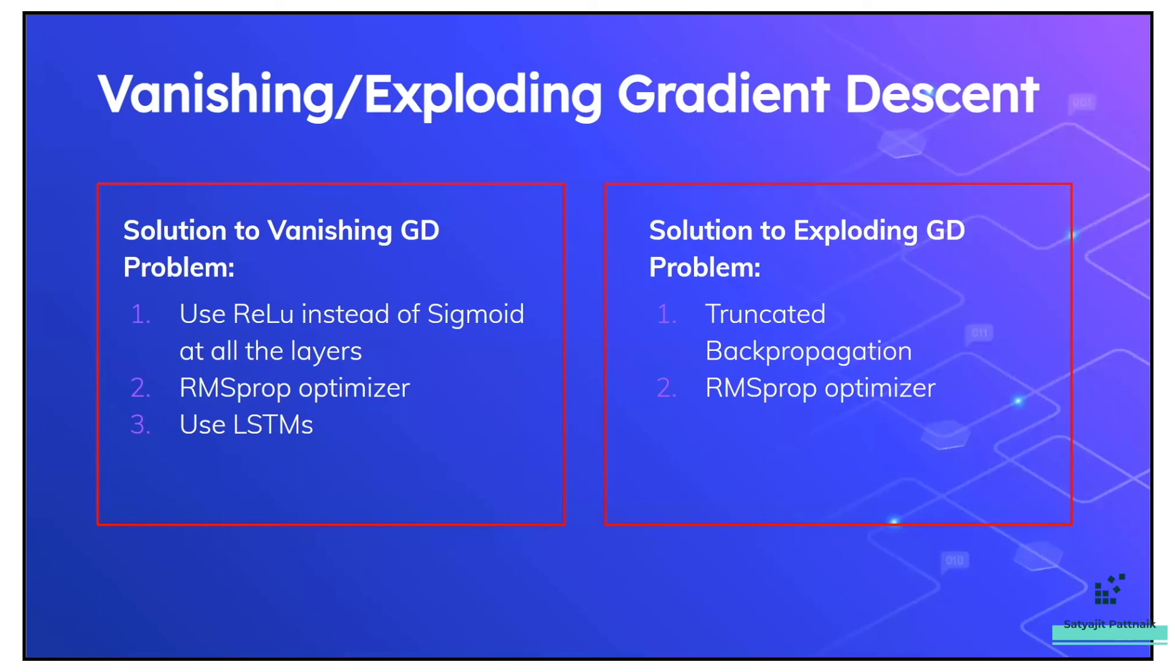So one of the solutions to vanishing gradient problem is using the ReLU function instead of sigmoid function at all the hidden layers. In the output layer, if it's a binary classification problem, you can use sigmoid function, but just avoid using sigmoid functions in each and every hidden layer. One or two hidden layers, it's okay. But ReLU is preferable, or you can use softmax. But sigmoid and tanh, just try not to use them in all the hidden layers. Apart from that, there is an optimizer called RMSprop optimizer that was also introduced to get rid of the vanishing gradient and exploding gradient problems. In case you want to know more about the RMSprop optimizer, I will probably make a video on that.